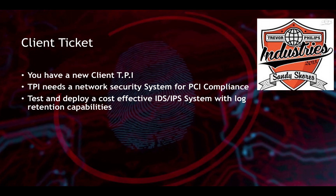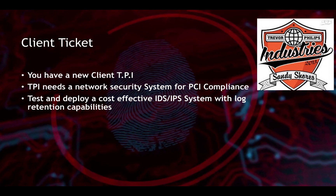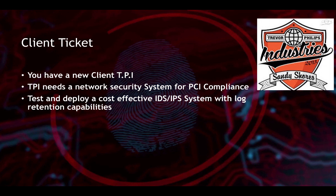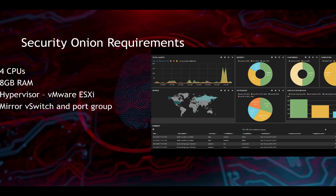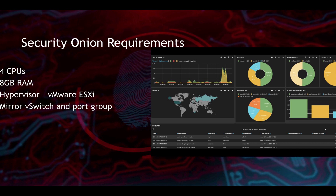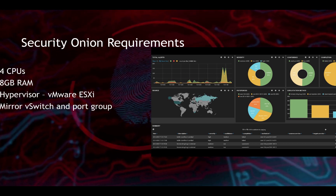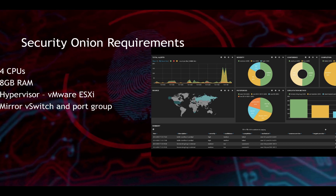For PCI compliance, that security system needs to contain IDS and IPS. So you need to test and deploy a cost-effective IDS and IPS system that can also keep logs. You decide to try Security Onion because you've heard that you can create wonderful dashboards and also use the SIEM system to track network intrusions.